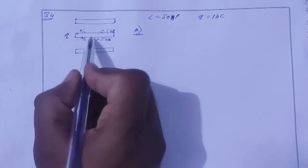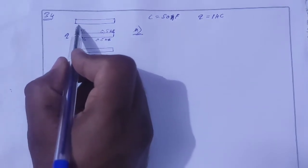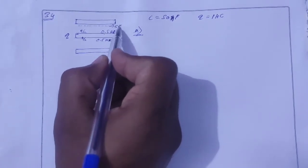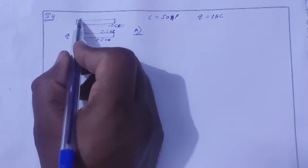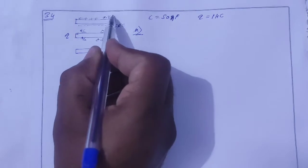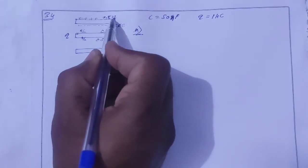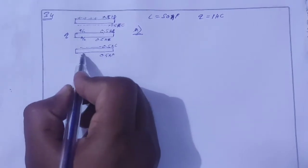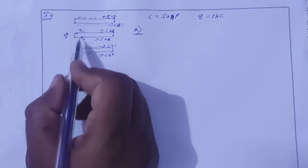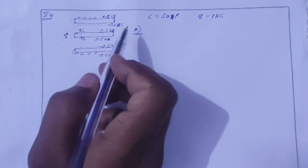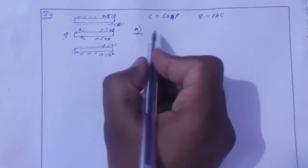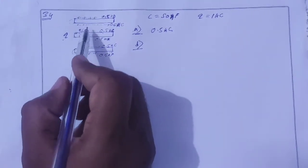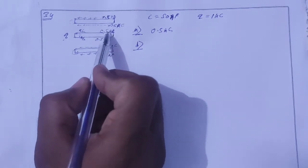Here is 0.5 microcoulomb induced, which is negative — minus 0.5 microcoulomb. So the first answer is 0.5 microcoulomb on the outer surface of the upper plate.